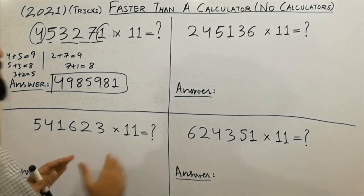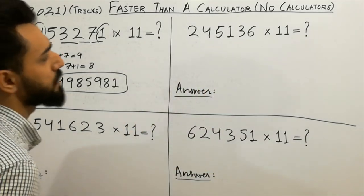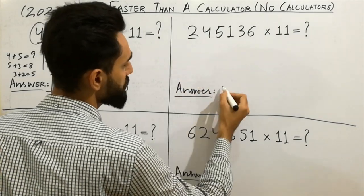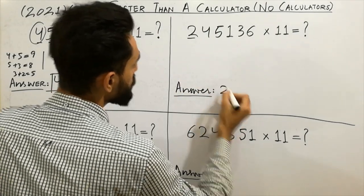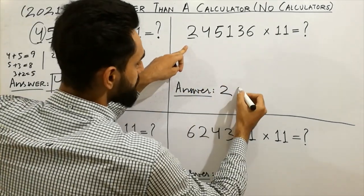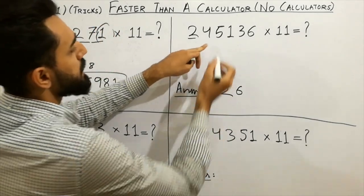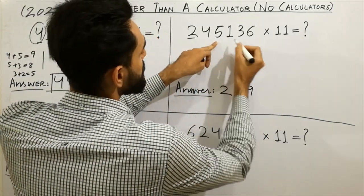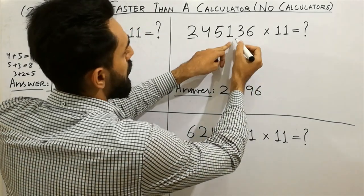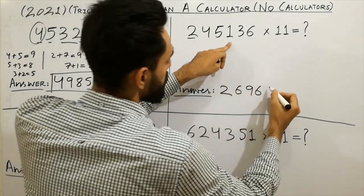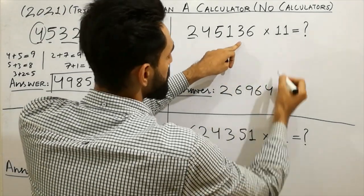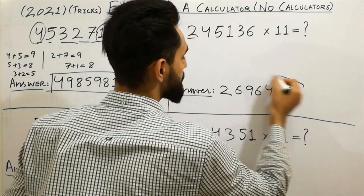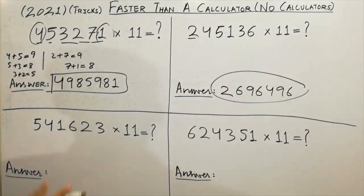Similarly, you can do these other values. I'll solve the second one now. First, write the first digit: 2. Then 2 plus 4 equals 6. Next, 5 plus 4 equals 9. Then 5 plus 1 equals 6. Then 3 plus 1 equals 4. Then 6 plus 3 equals 9. And at the last, write the final digit: 6. That's it.